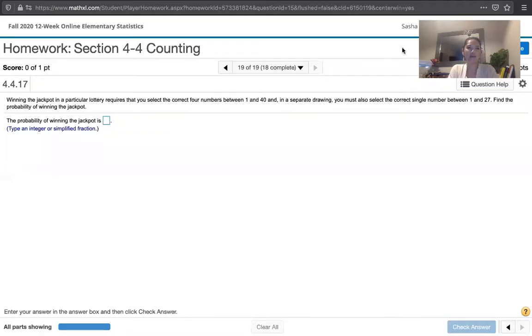In this video, we discuss problem 4.4.17 from section 4.4 of Essentials of Statistics, sixth edition by Mario Triola. The problem statement says: winning the jackpot in a particular lottery requires that you select the correct four numbers between 1 and 40, and in a separate drawing you must also select the correct single number between 1 and 27. Find the probability of winning the jackpot.